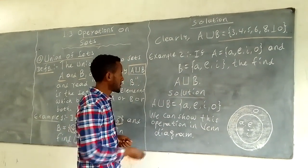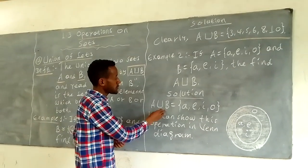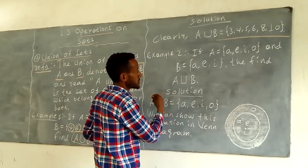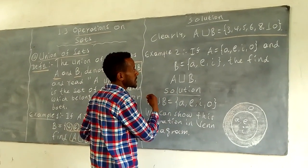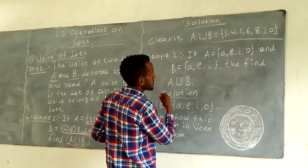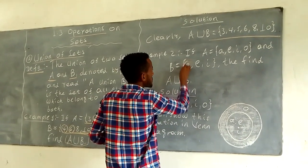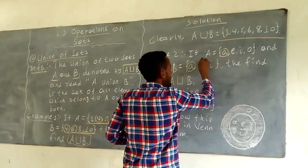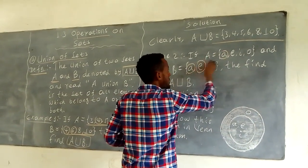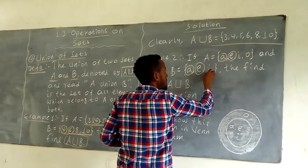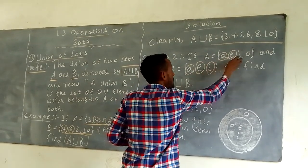Solution: A union B. First, check the same elements. Here is A, here is E, here is I.